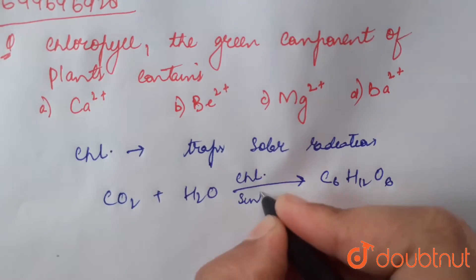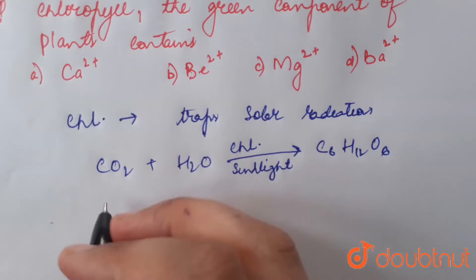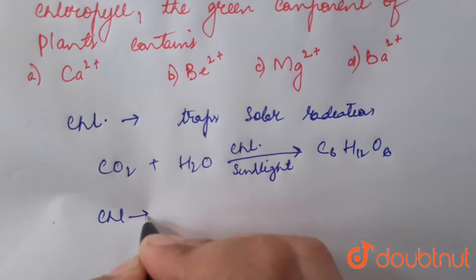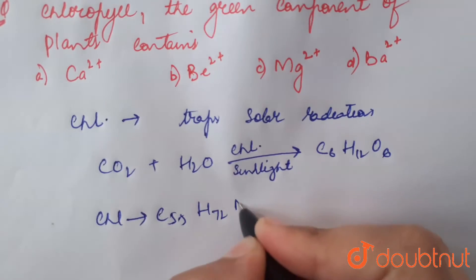The chemical formula of chlorophyll molecule is C55H72Mg